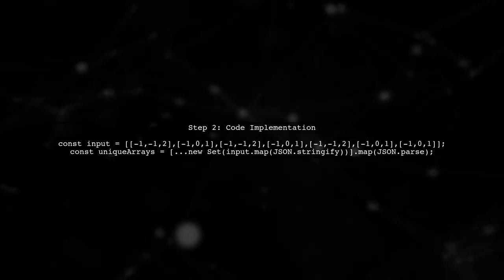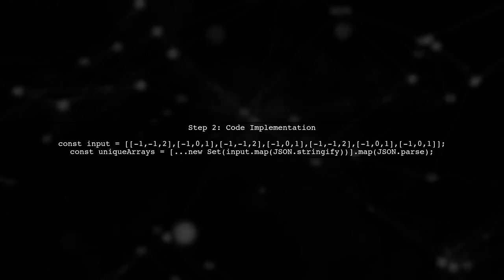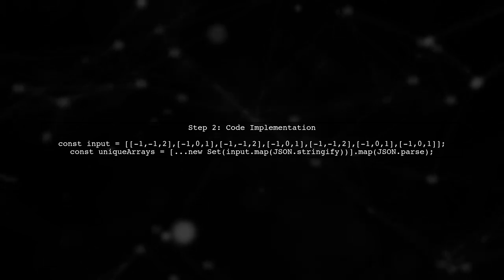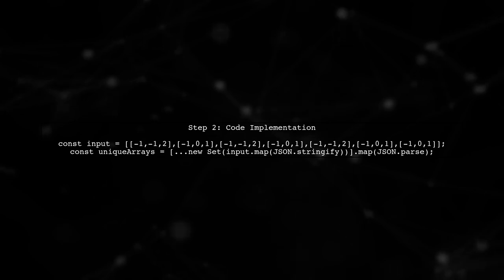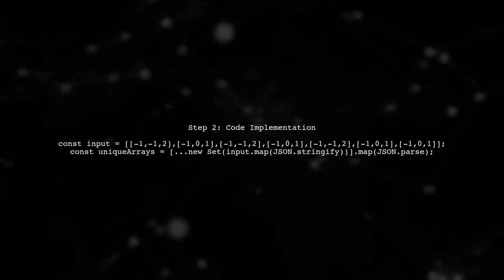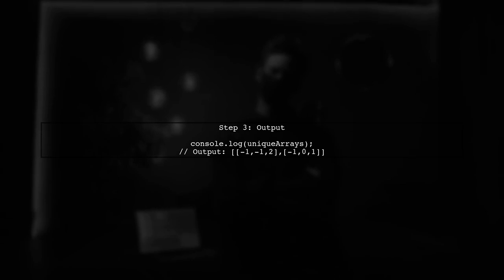Next, we will use the filter method to iterate through the array and the Set to keep track of unique arrays. Here's how we can implement this. Finally, let's log the output to see the result. The expected output should contain only the unique sub-arrays.